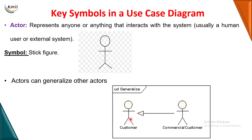Sometimes we can give a relationship between one actor and another actor. This is not compulsory, but when one particular actor has a generalization relationship with another actor, you can give that relationship. Generalization means one particular actor belonging to another — for example, vehicle, car, bus, bike: all are vehicles. In this example, a commercial customer is a part of a customer, so I have given a generalization relationship. If you want to connect two actors, make sure it is generalization only.